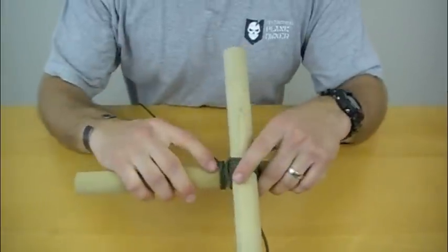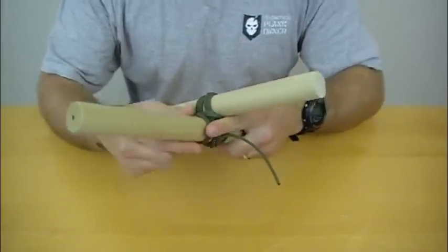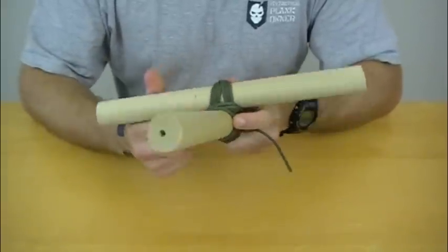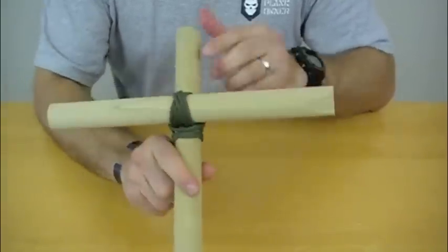Once you have your securing clove hitch down there at the bottom, you are essentially done with a diagonal lashing.